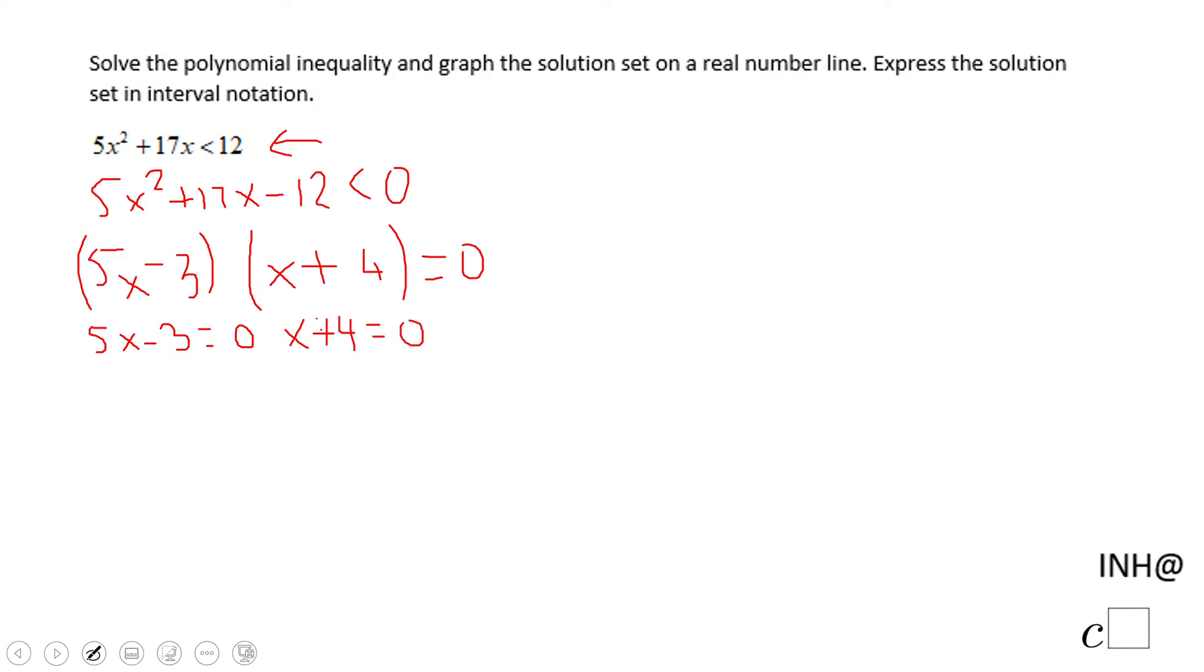I'm going to get here 5x = 3, which gives me x = 3/5. That's this one moment where this polynomial is zero. And x + 4 = 0, that is going to give me x = -4. So these are the two zeros of the quadratic polynomial.